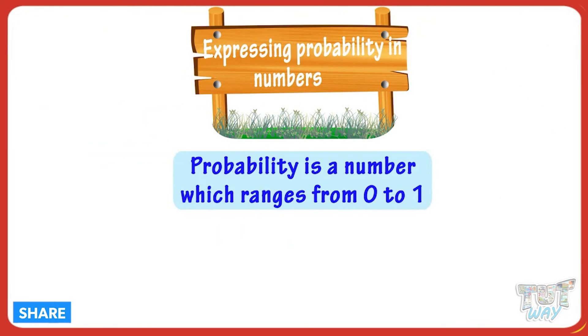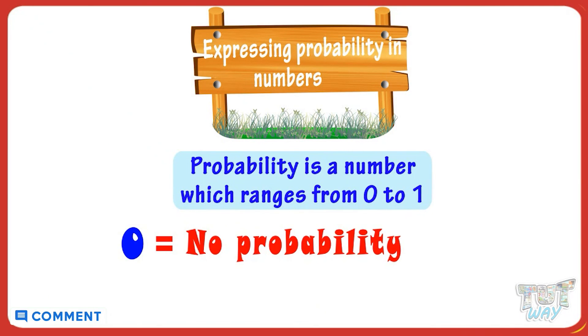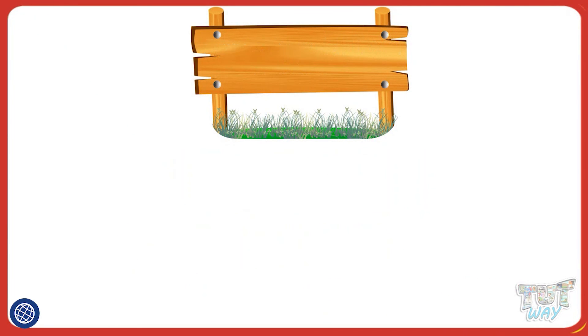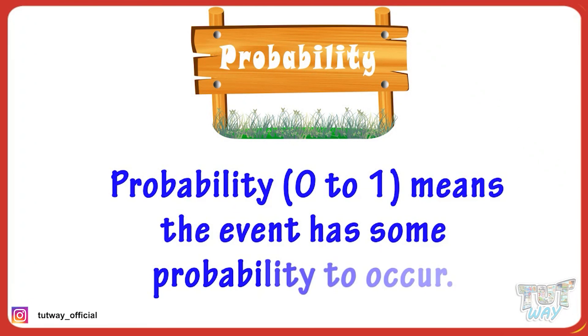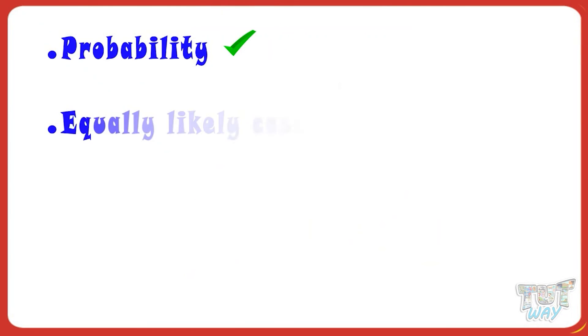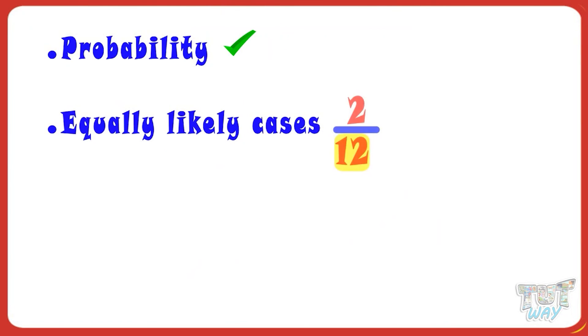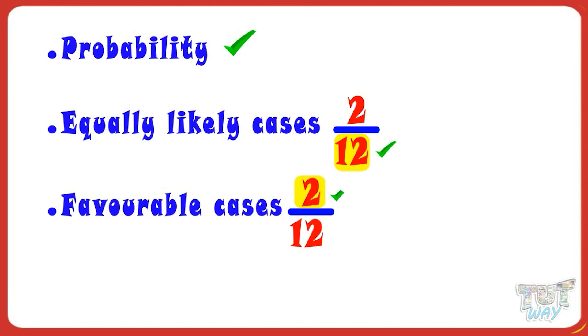So, kids, probability is a number which ranges from zero to one. Zero means no probability, and one means the event is certain to occur. And probability between zero and one means it has some probability to occur, but is not certain to occur. You now have a fair idea about what is probability, what are equally likely cases or possible outcomes, what are favorable cases, and how to find probability.